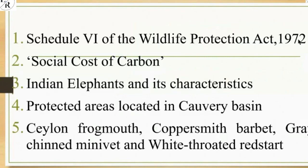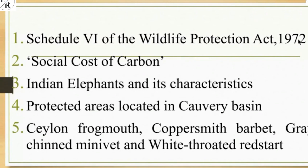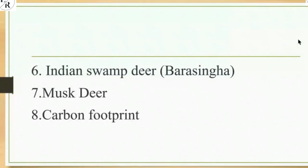Let's come to 2020. Exclusive eight topics were asked. The first question was related to Schedule 6 of the Wildlife Protection Act 1972. The second was related to social cost of carbon. The third was related to the Indian elephant and its characteristics. The fourth was about protected areas located in Cauvery Basin. The fifth was about Ceylon Frogmouth, Coppersmith Barbet, Great Chin Minivet and White-throated Redstart. The sixth was Indian Swamp Deer, seventh was Musk Deer, and eighth was Carbon Footprint. The Indian elephant and its characteristics question best shows the capacity of UPSC.